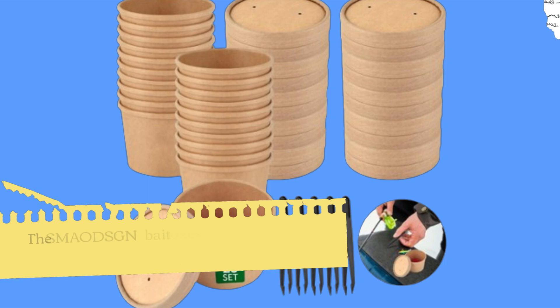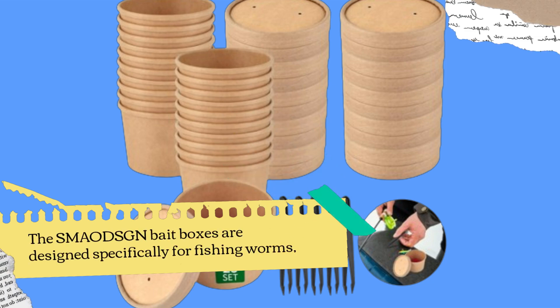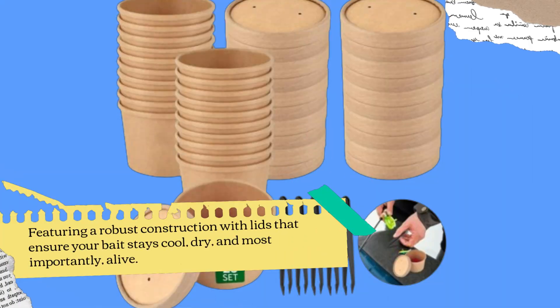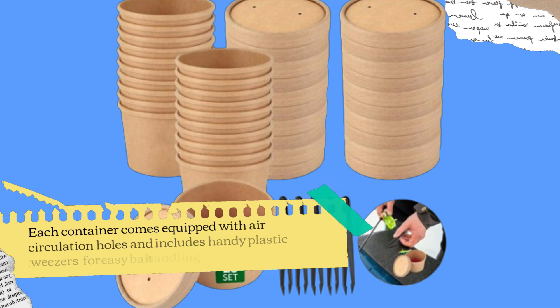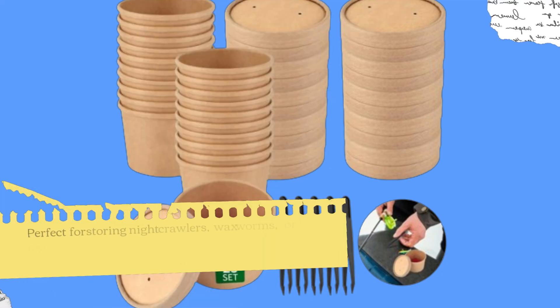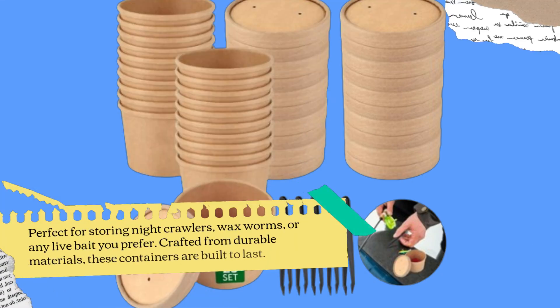The SMAO DSGN Bait Boxes are designed specifically for fishing worms. Featuring a robust construction with lids that ensure your bait stays cool, dry, and most importantly, alive. Each container comes equipped with air circulation holes and includes handy plastic tweezers for easy bait handling. Perfect for storing night crawlers, wax worms, or any live bait you prefer.